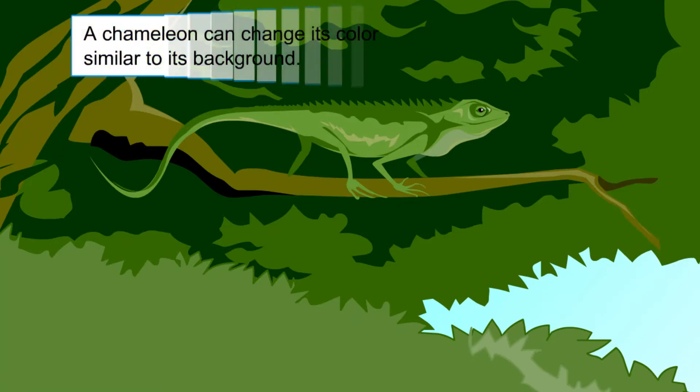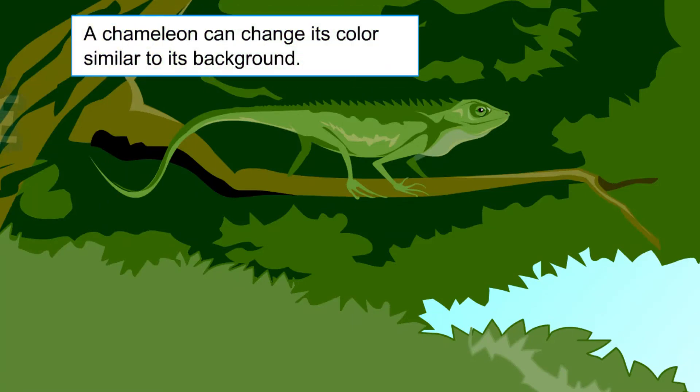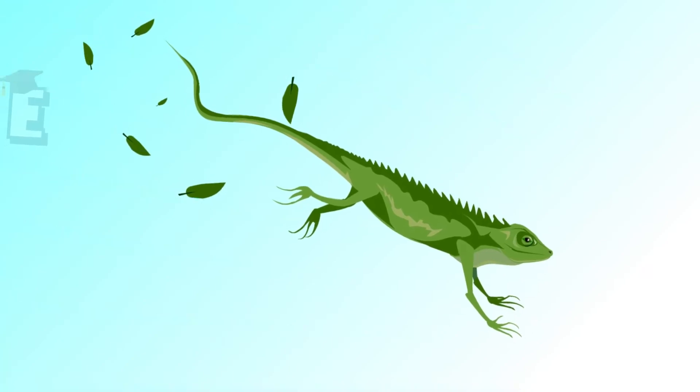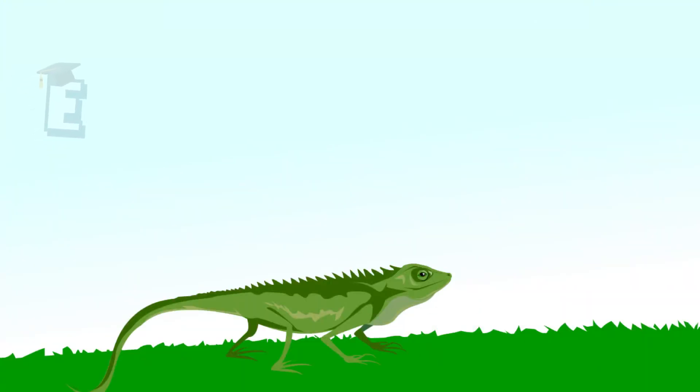Look at this chameleon. Chameleons can change their body color to suit their background. When a chameleon is on the grass or on a tree, its color turns green.